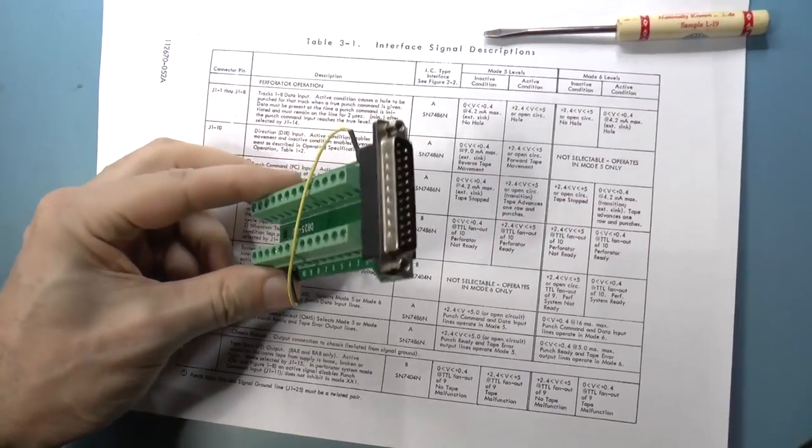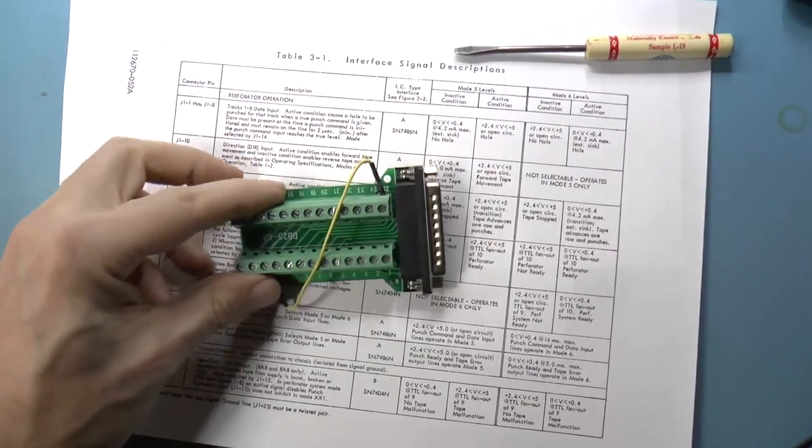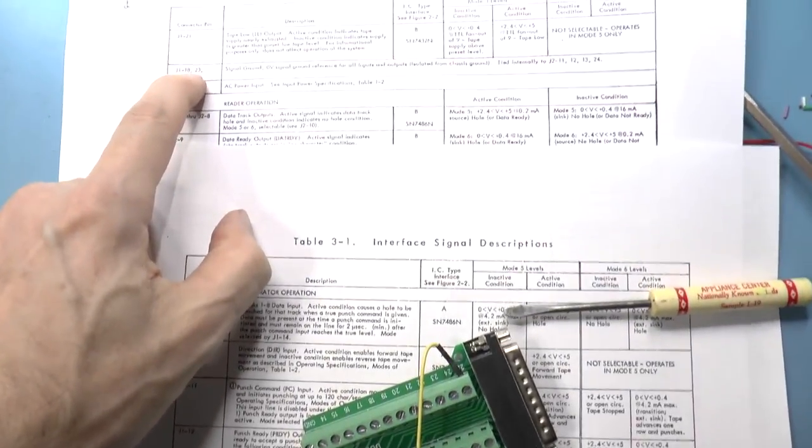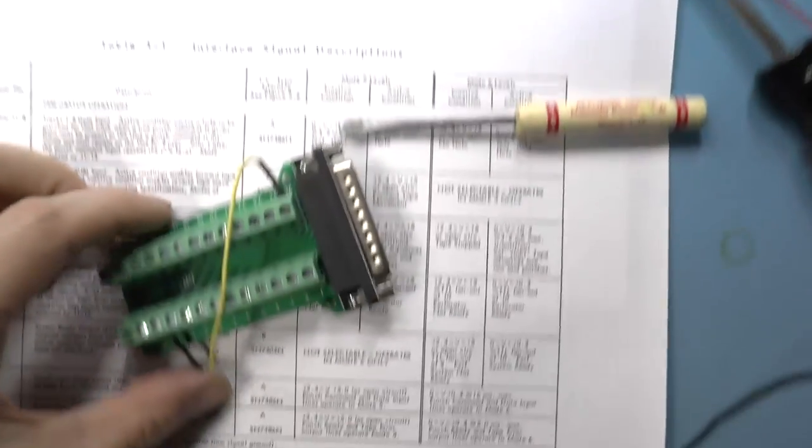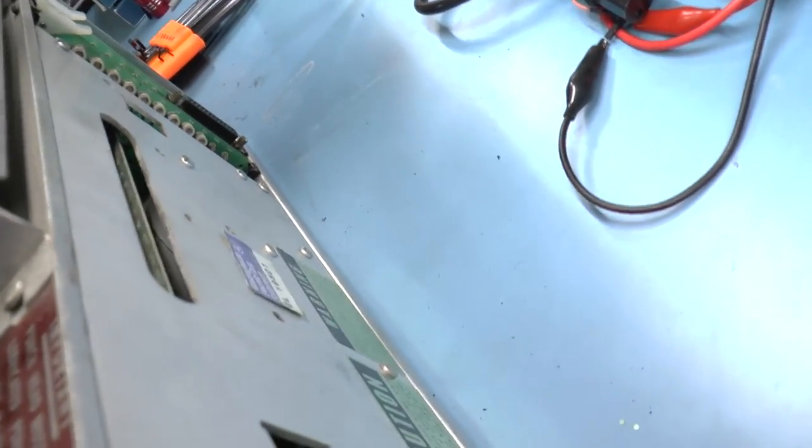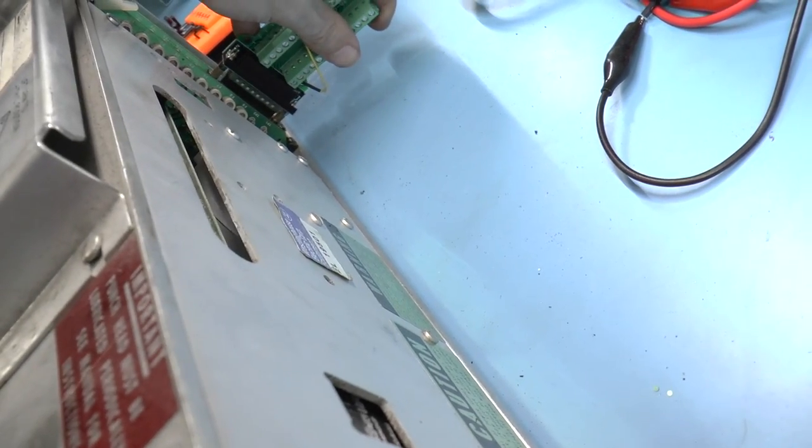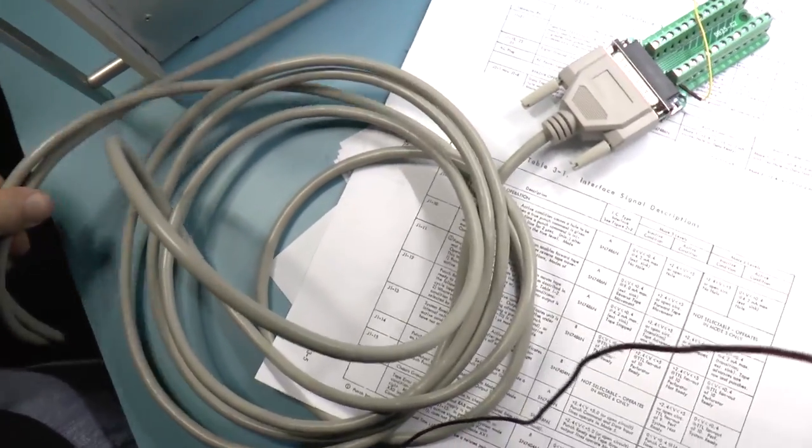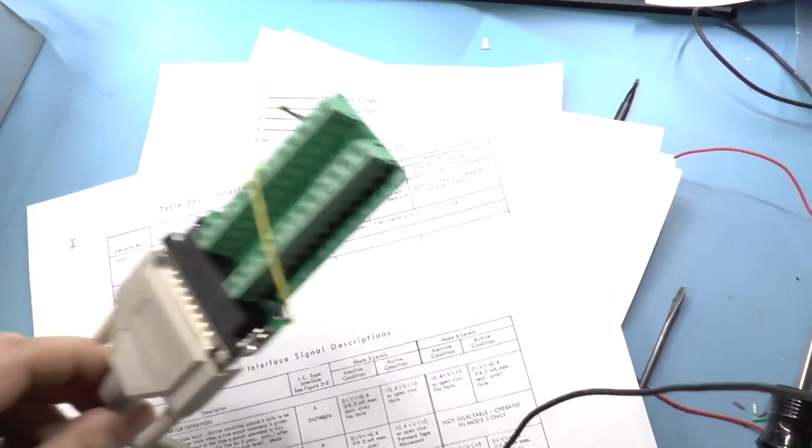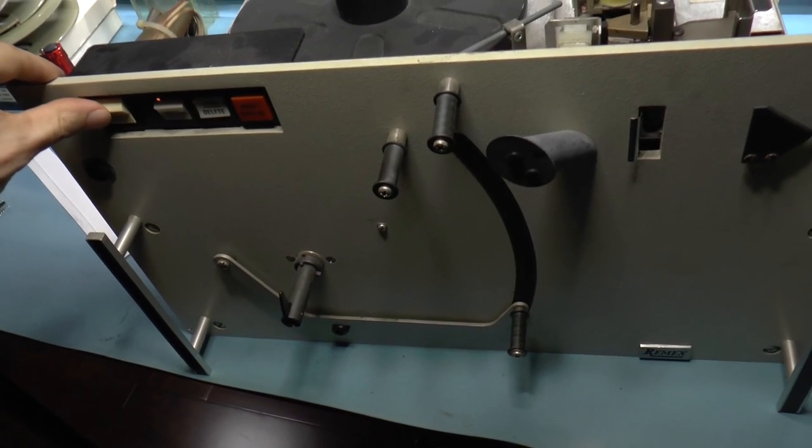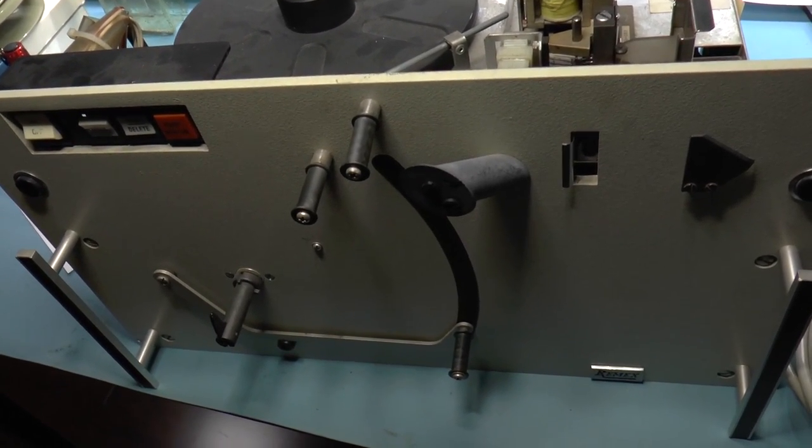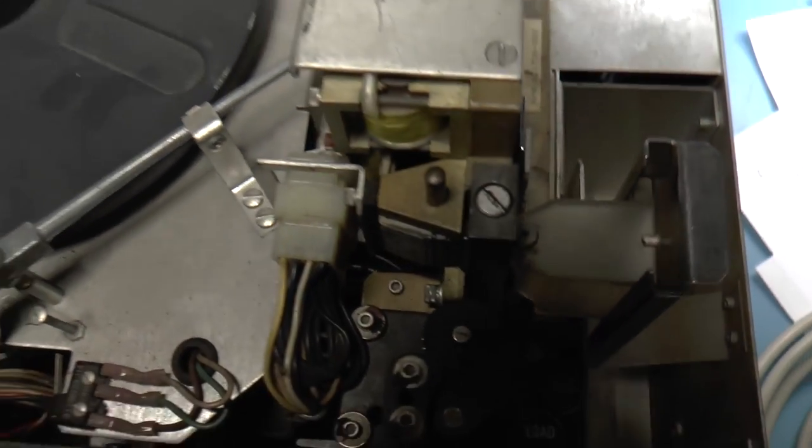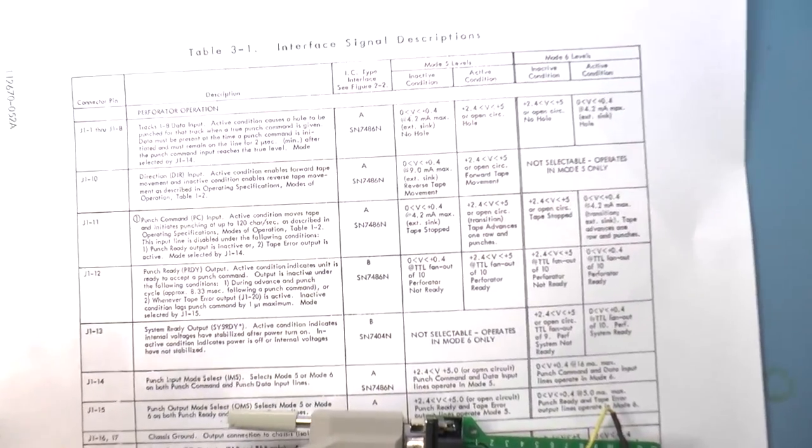All right. So I have this fun little DB 25 breakout thing with the screw terminals. So I've just put a jumper between the punch command number 11 and one of the grounds, this one is 25, so I'm just going to plug that into the back just like that. And apparently I cannot. And that's okay because I've got an enormous cable that I have plugged into the back and plugged into my jumper connector. All right, let's turn this thing on. All right. And let's press feed. Well, I don't think anything's happening. Well, maybe there are some other things that are wrong.